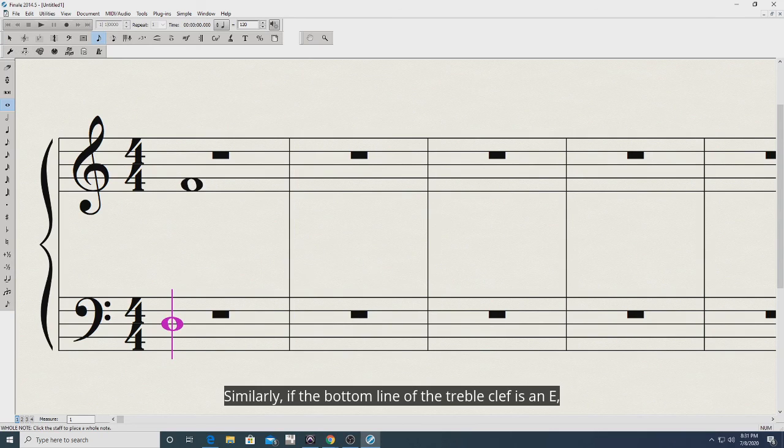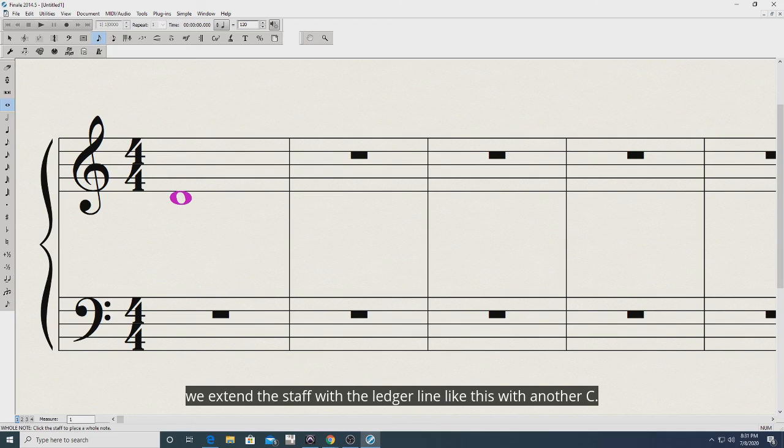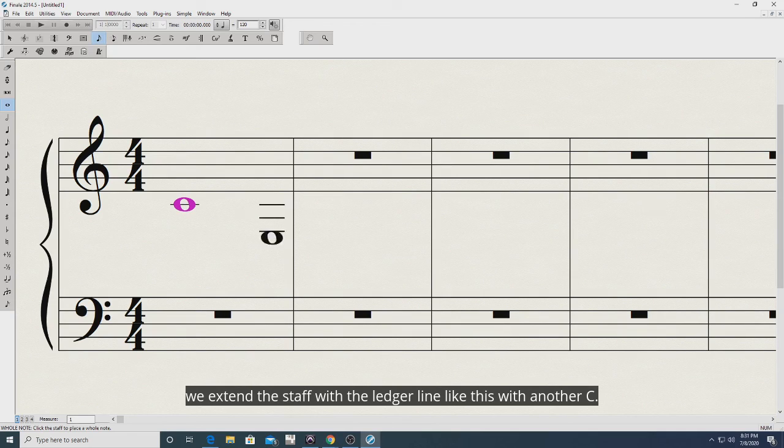Similarly, if the bottom line of the treble clef is an E, the space below that is a D, and we extend the staff with the ledger line like this with another C.